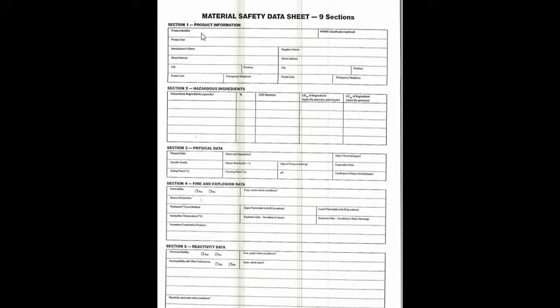So basically, for Section 1 — the product information — you need to find and put the product identifier, product use if you have it, the manufacturer's name, street address, city, postal code, the supplier's name if you have it, street address, city, province, emergency telephone number, and WHMIS classification as an option.